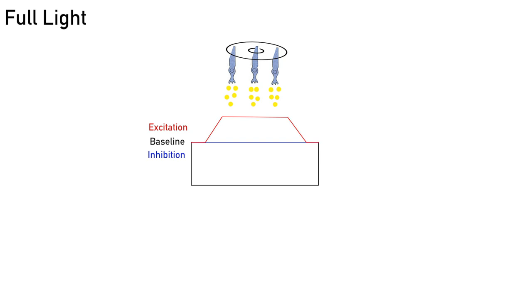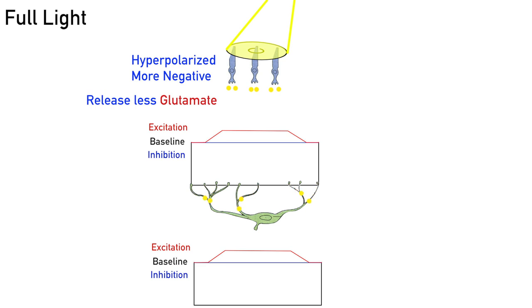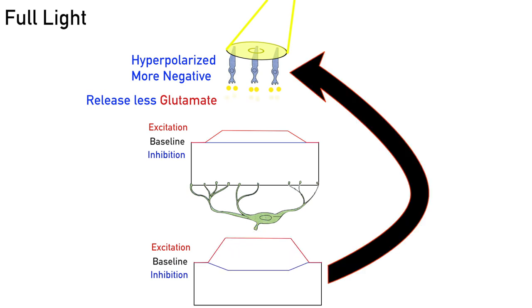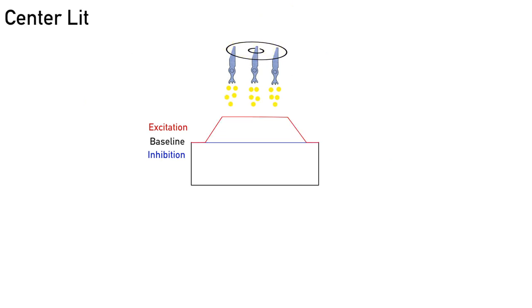Full light. When light hits the entire receptive field, then all of the cones become hyperpolarized, or more simply, they become more negative and release less glutamate. Since all of the cells are providing low levels of excitement to the horizontal cells, then in return it provides low levels of inhibitory feedback, which allows all of the neurons to release a little more glutamate. This is the opposite effect of the complete darkness state.